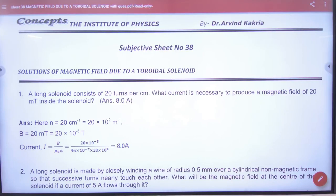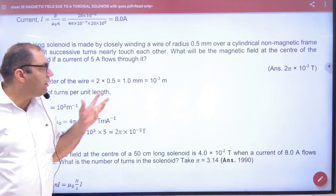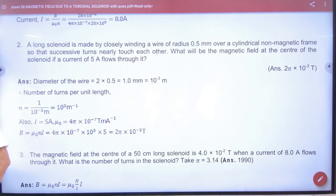Question number one, now question number two. A long solenoid is made by closely winding a wire of radius 0.5 mm. The wire used has a radius value of 0.5 mm. What is this 0.5 mm?